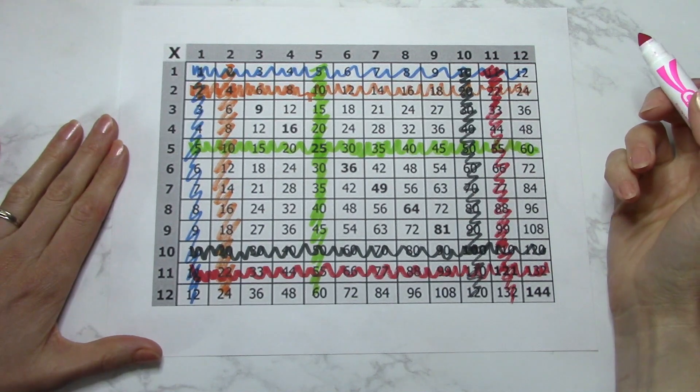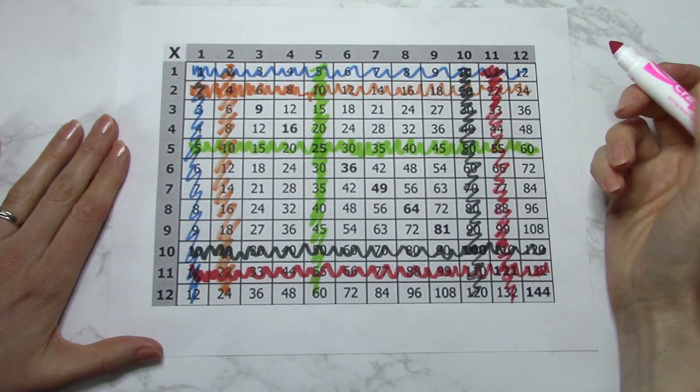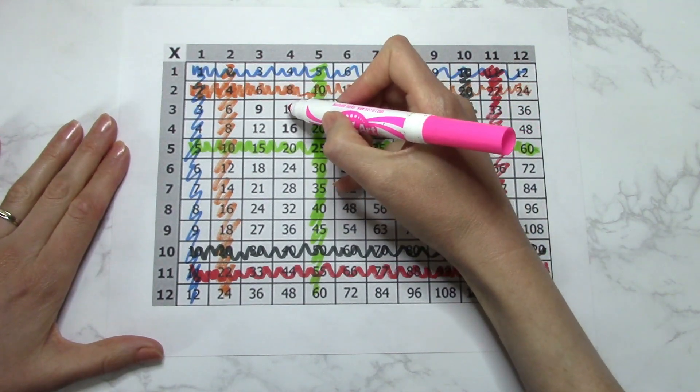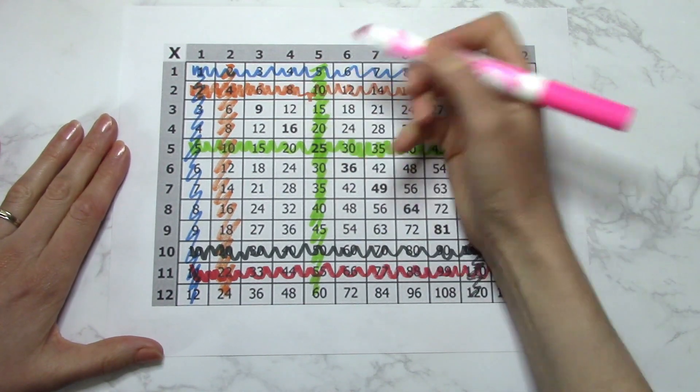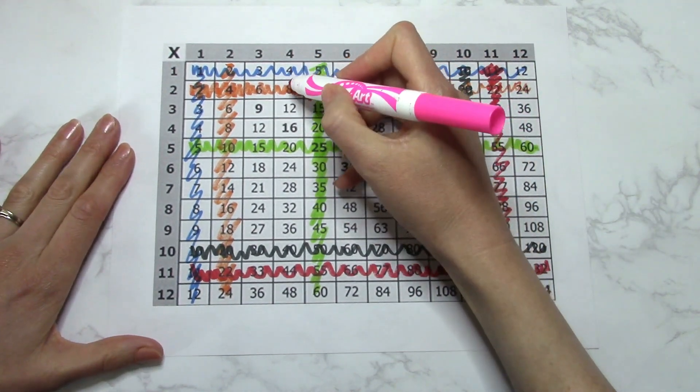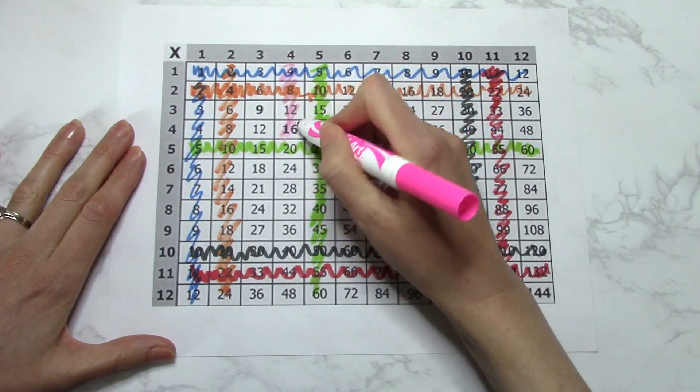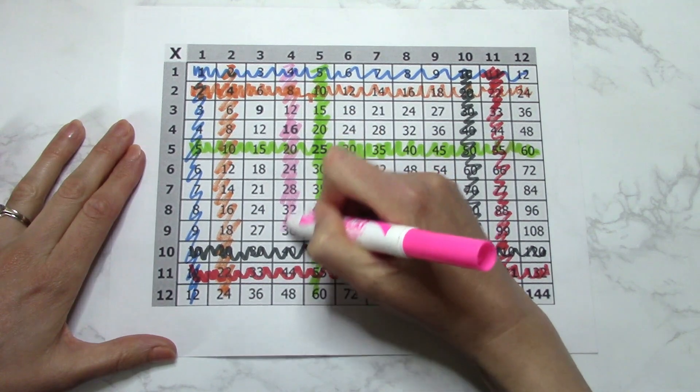Now if you can do twos, then you can do fours. You just multiply it by two. So 2 times 3 is 6, multiply that by 2 and we get 12. So fours are pretty much like the twos.